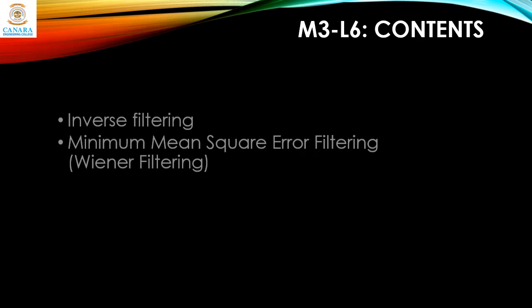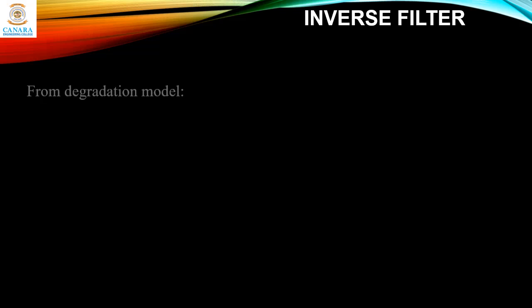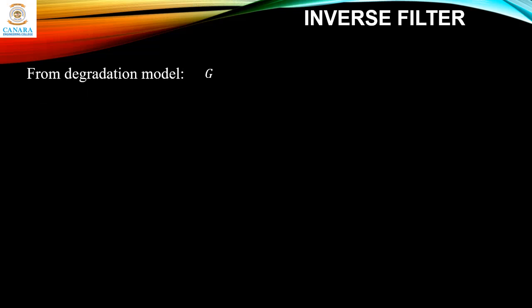Welcome back everyone. In this lecture we learn about inverse filtering and minimum mean square error filtering, which is also known as Wiener filtering. From the degradation model we have the equation G(u,v) = F(u,v) · H(u,v) + N(u,v), where H(u,v) is the degradation function plus the noise. Because of the degradation function and the noise, we have the degraded image.